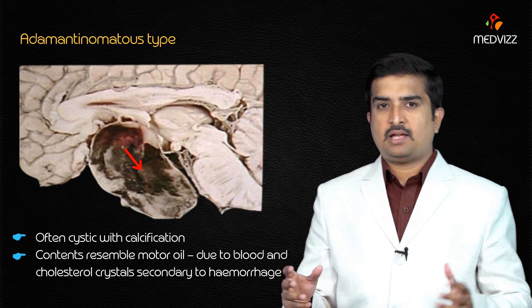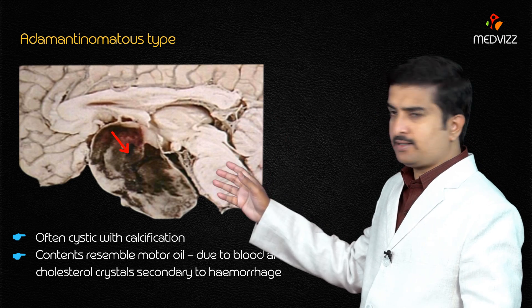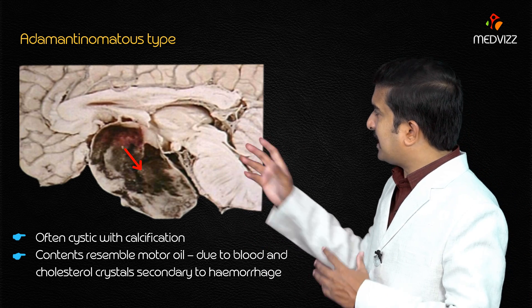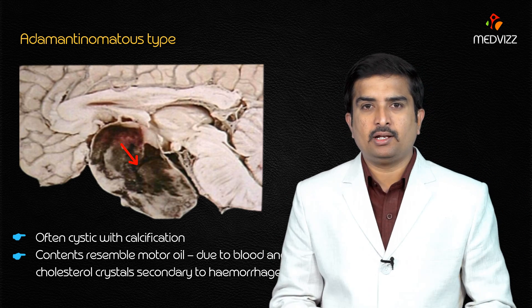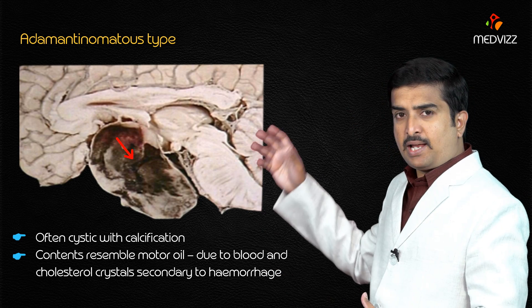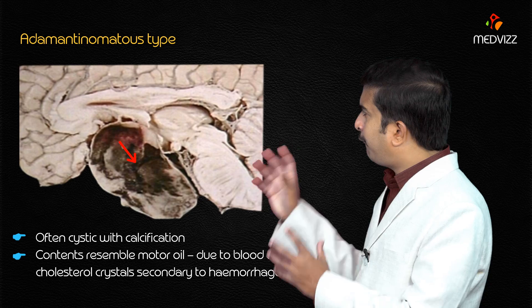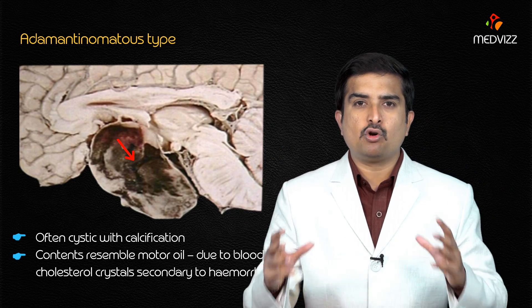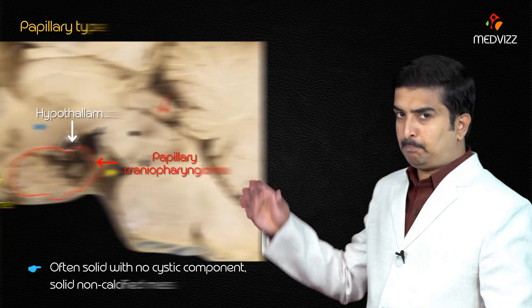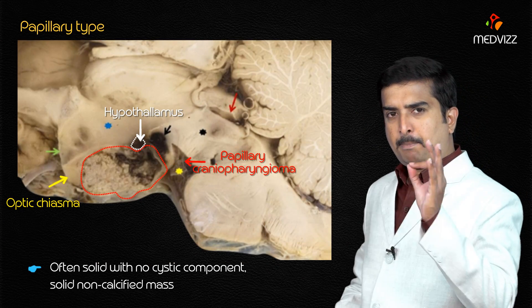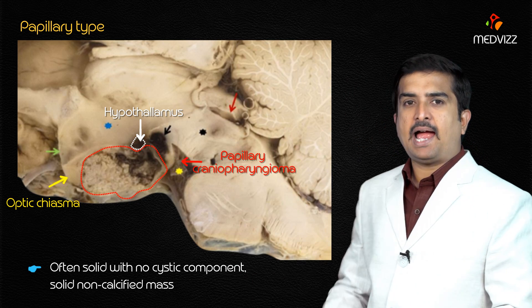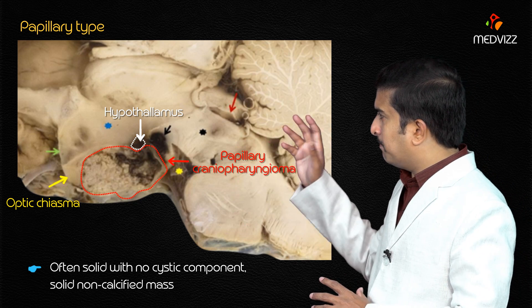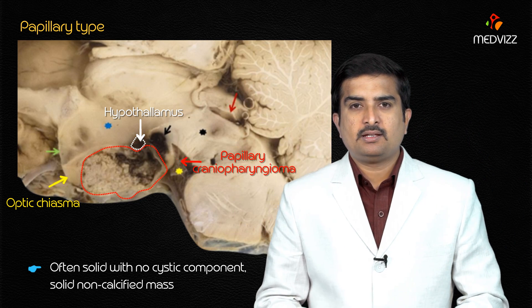Regarding gross pathology, the adamantinomatous type is often cystic with predominant calcification. The contents resemble motor oil, mainly because blood and cholesterol crystals mix and form a hemorrhage giving that appearance. The second type — the papillary type — is often solid with no cystic component and has a non-calcified mass. This is how you can differentiate between the adamantinomatous and papillary types.